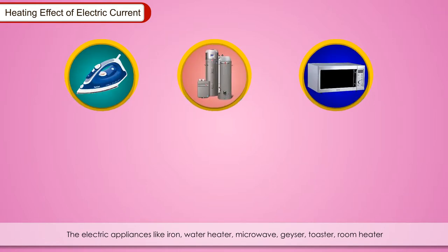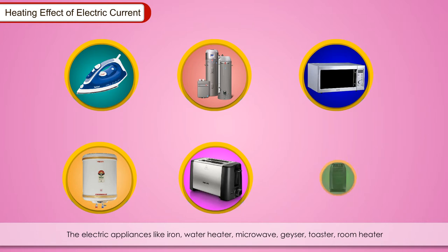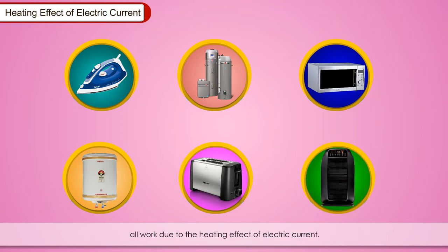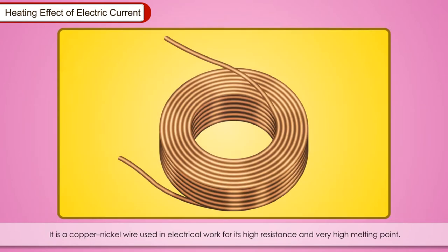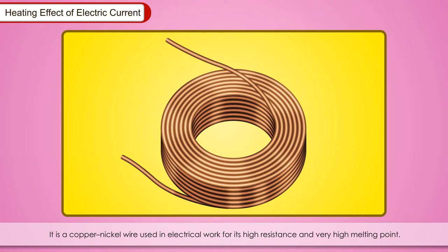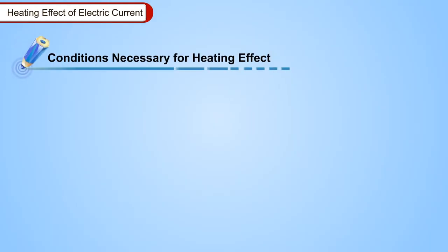The electric appliances like iron, water heater, microwave, geyser, toaster, room heater, all work due to the heating effect of an electric current. An electric appliance has a highly coiled wire or a metallic rod. This is called the element of the heating appliance. The highly coiled structure increases the surface area and thus provides more heat. The elements are usually made of constantan. It is a copper-nickel wire used in electric work for its high resistance and a very high melting point.